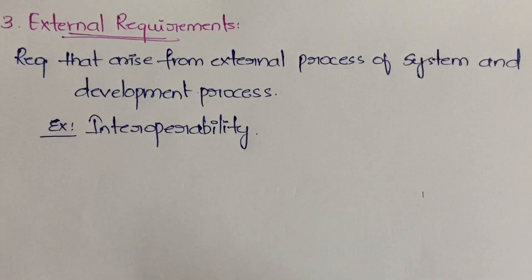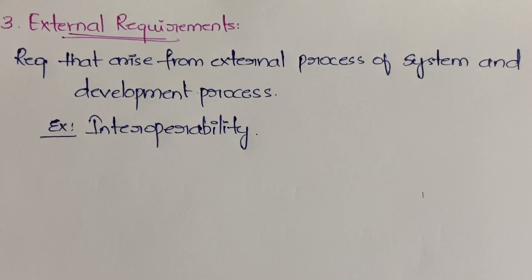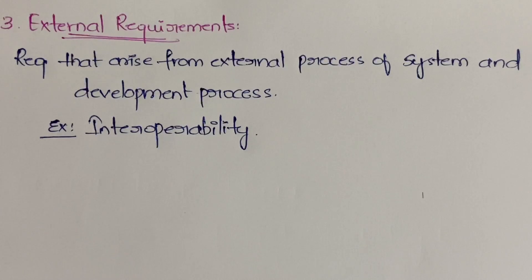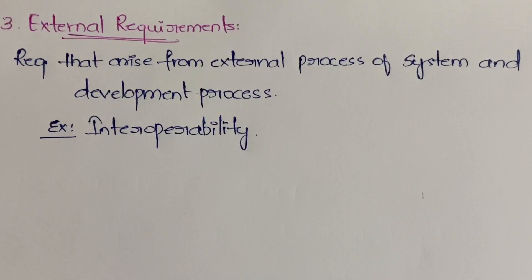The third type is external requirements. These are the requirements that arise from the external environment of the system — that is, outside the system. An example is interoperability, which means the system must be able to work with anything — it has to operate over any environment. Such requirements come under external requirements.